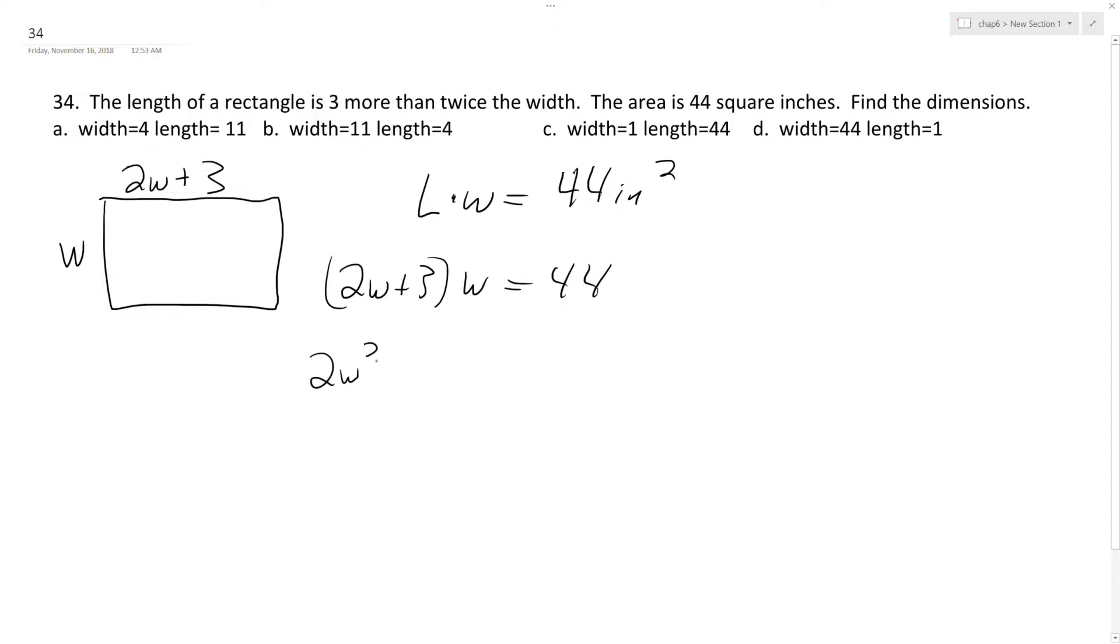So we end up with 2W squared plus 3W minus 44 is equal to zero. So, oh no. No, 2W and then W. So I have plus 11 here, and minus 4 here. Yeah, that makes sense.